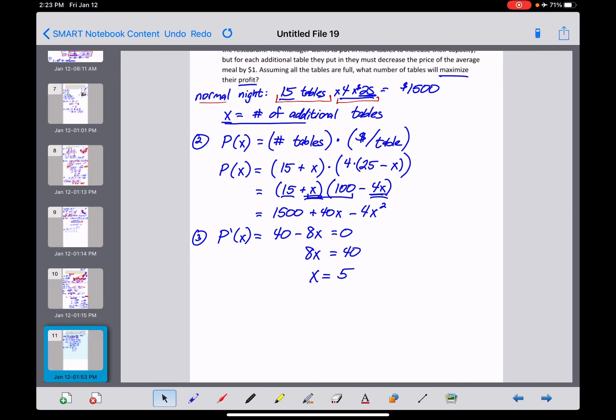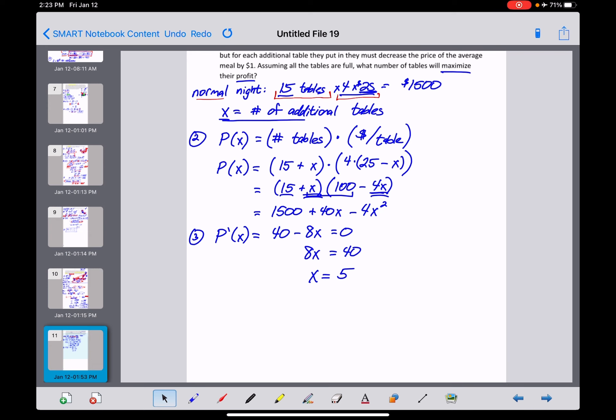So, what do they ask us to find right here? Assuming all the tables are full, what number of tables will maximize their profit? So to answer the question here on step 4, the number of tables on a normal night was equal to 15. And X is the number of additional tables. So we're going to add 5 more tables to our normal 15 and get 20 tables now. And that should be the amount that maximizes our profit.